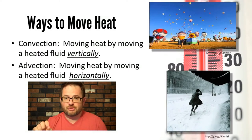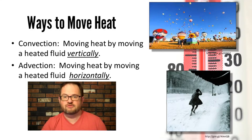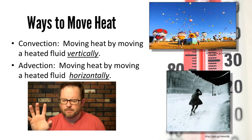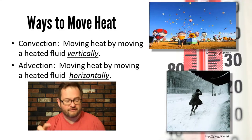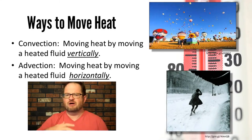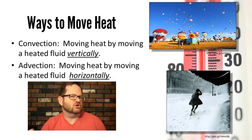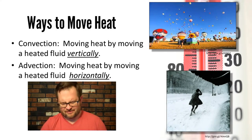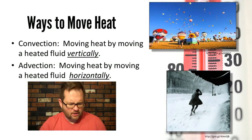Number two is two processes that are way more efficient for moving heat around in the atmosphere — convection and advection. Both convection and advection are about moving a fluid. In this case we're talking about air as our fluid. Fluid, remember, means just anything that flows, so air is a fluid. Convection is moving heat by moving a heated fluid vertically, and advection is moving heat by moving a heated fluid horizontally.